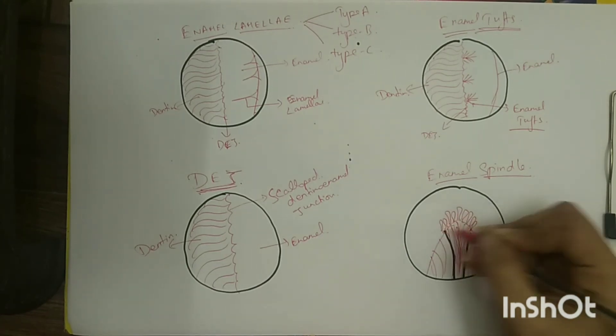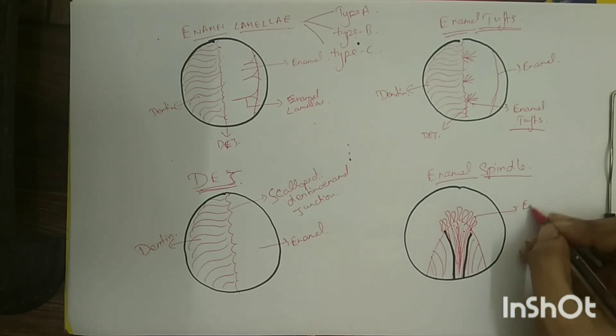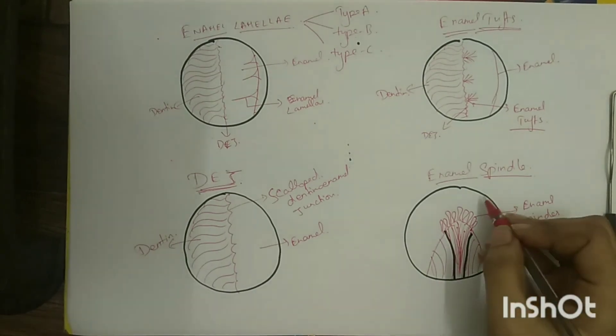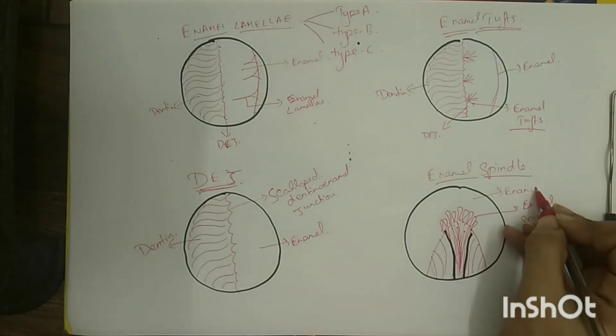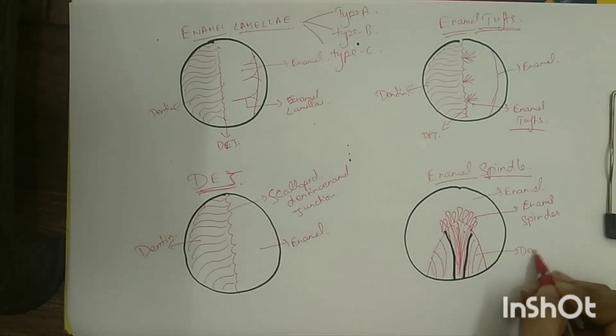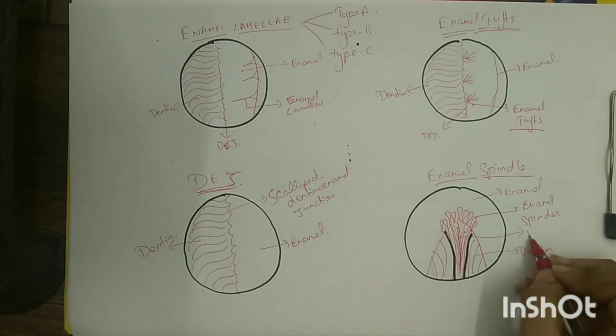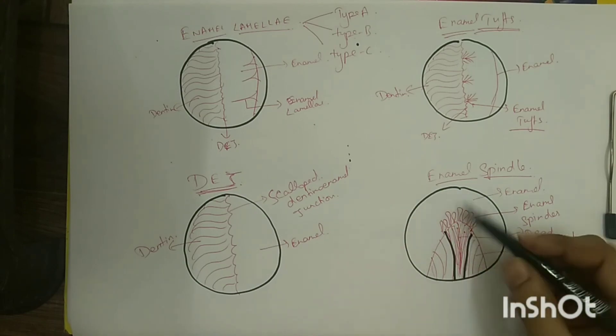The greatest numbers of enamel spindles are found in the region of cusps. In ground sections, the organic structure of spindles disintegrates and is replaced by air, and thus enamel spindles appear dark in transmitted light.